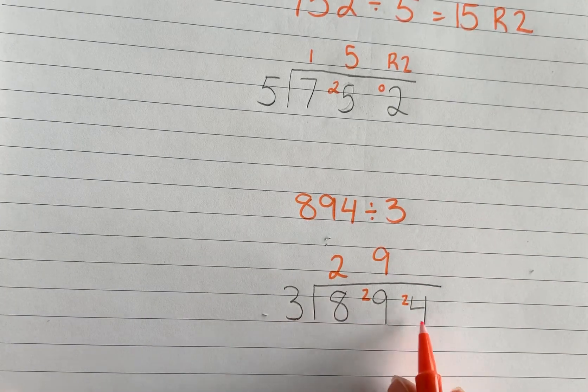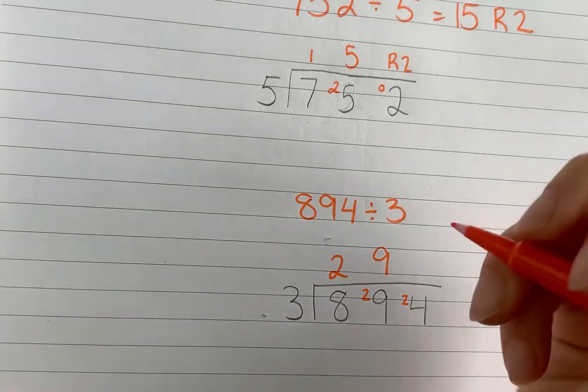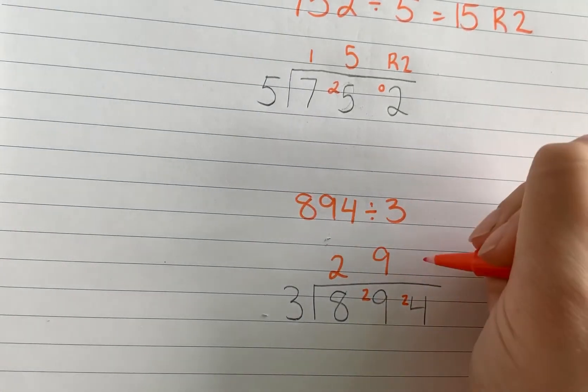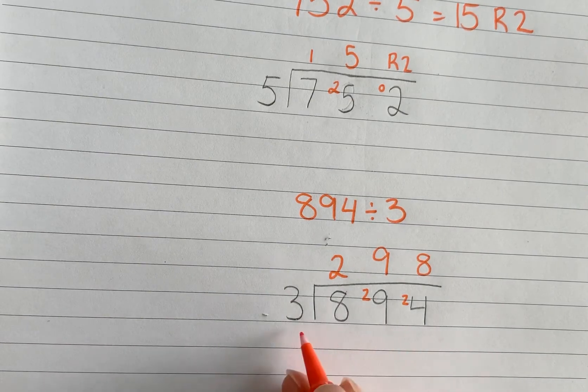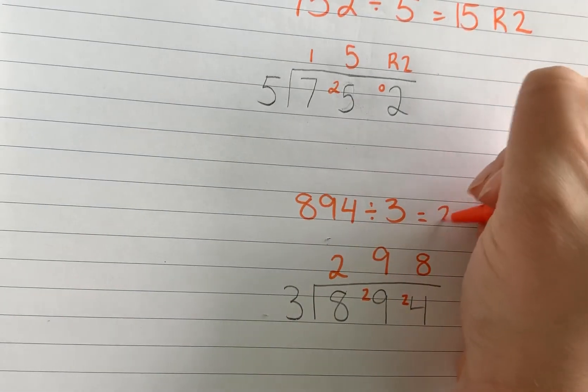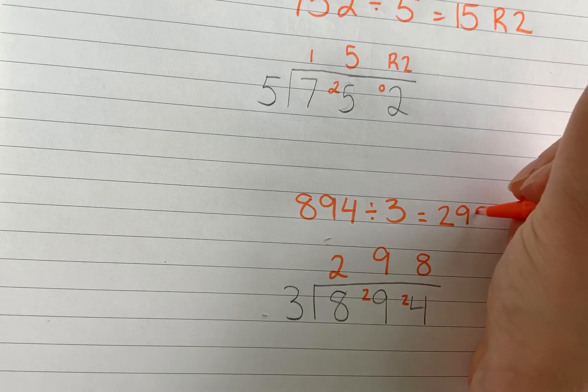3 goes into 24. Well, I just did that. 8 times 3. There we go. 894 divided by 3 equals 298. Pretty cool, right?